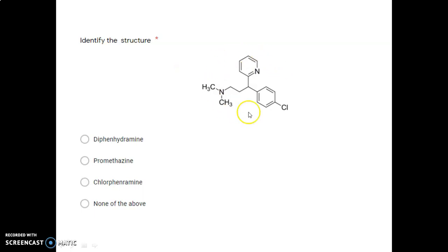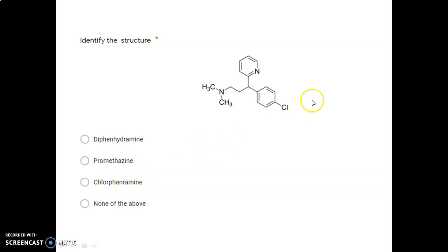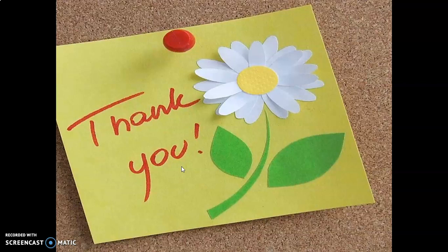The last question: identify the structure from the given options. Looking at the structure, counting the carbon chain — one, two, three — this is a propanamine analog. The compound has a chloro-substituted phenyl group, so the correct option here is chlorphenamine. This way we have finished the second chapter on antihistamines. Thank you.